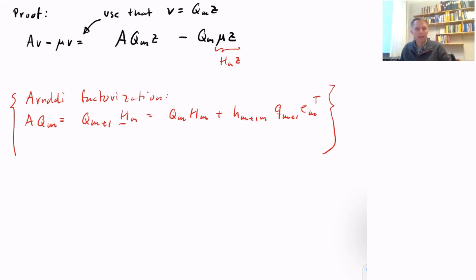First we get this block Q_M H_M, and then we get the product of the last column and last row of Q_M and H_M. So it's H_M+1,M Q_M+1 e_M, where e_M is the M-th unit vector, and we insert this into our quantity here.